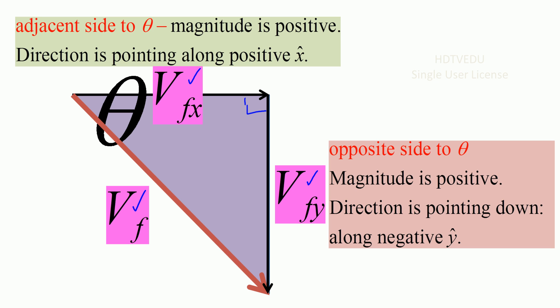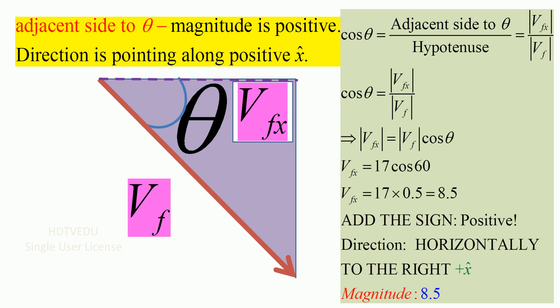there is a 90-degree angle there. We see that this angle is 60 degrees — that is theta. This is our horizontal component and this is our vertical component. We are given the magnitude of the velocity vector, which is 17, and we are also given the angle, 60 degrees. The question is: can you find the x and y components? And the answer is yes.